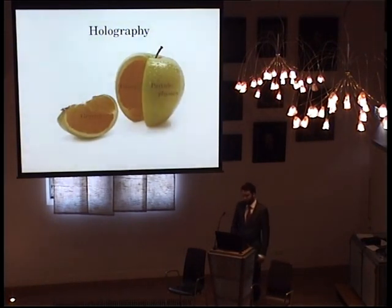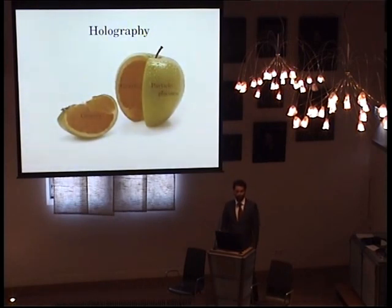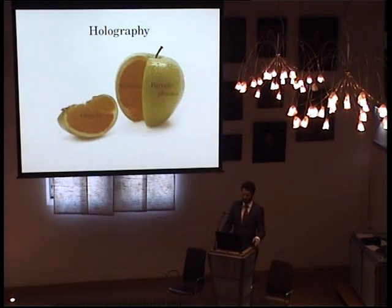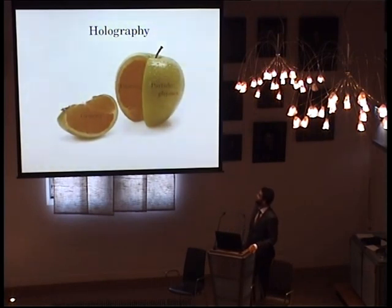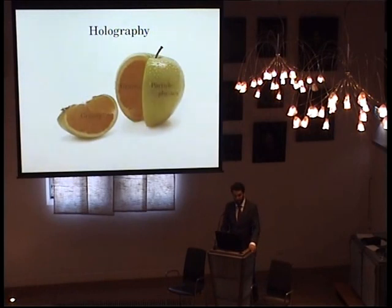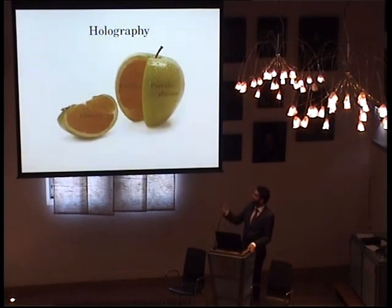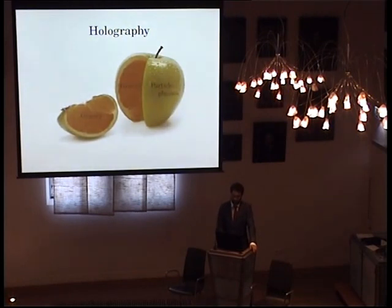From string theory, we found out that there's yet another relationship between apples and oranges — between gravity and the theory of the very small, like particle physics or quantum physics. The way I represent it here is: from the outside, this apple looks like a perfectly normal apple. But as it turns out, when you really start to look at what's going on in the middle of the thing, you see that it actually is an orange in a way. It's kind of an apple and an orange at the same time. So this allows for a translation between a theory of gravity and a theory of particle physics.